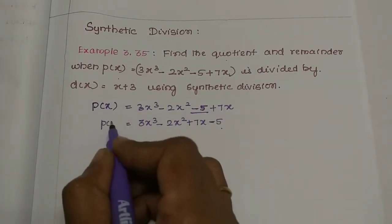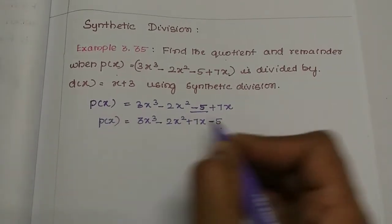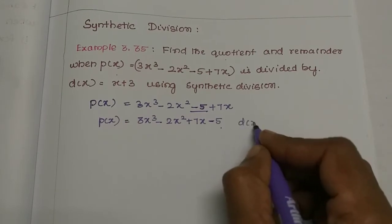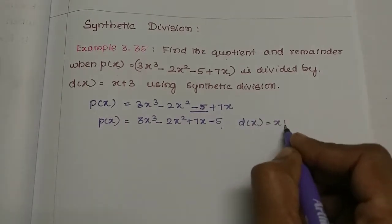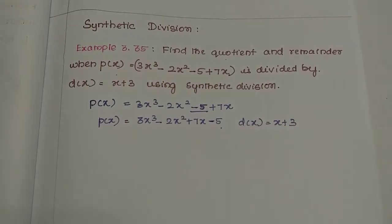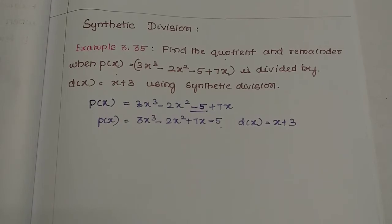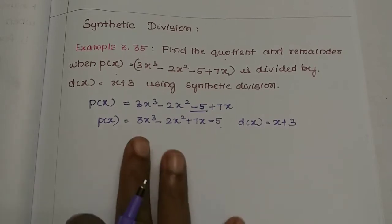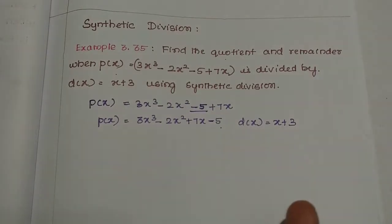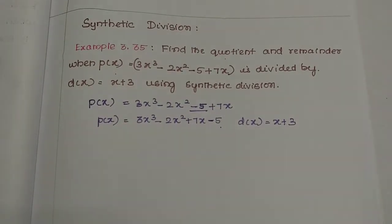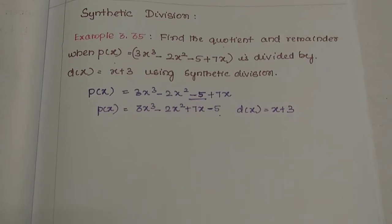Now p(x) is in standard form. We divide by x + 3. In synthetic division, unlike long division where you multiply, divide, subtract, and add with variables — here there are no variables. We only work with the coefficients.